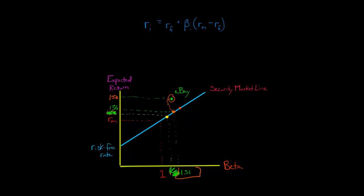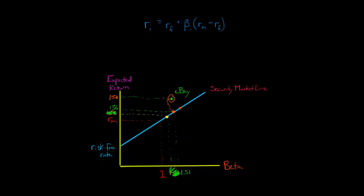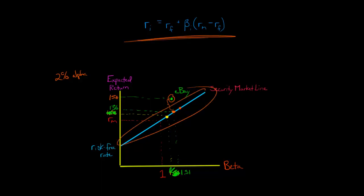eBay has a beta of 1.51, which is a measure of its systematic risk. Based on the capital asset pricing model — pictured here with the security market line — eBay should have an expected return of 13%, which is the point where it would fall on the security market line. Yet eBay is not on the security market line; it is off it. Here we have what is called a positive alpha, because the return is higher than what is predicted by the security market line. So eBay would have an alpha of 2%.